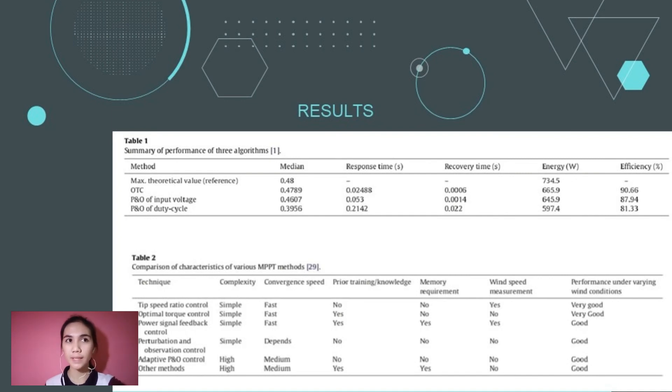It was followed by the P&O input voltage method, which took almost twice the time needed to reach the steady state, with the average value of coefficient power being 0.4607. While the P&O duty cycle method was found to be the slowest and least efficient method, as the response time was eight times longer than the first method. It was also found that P&O duty cycle method did not maintain the same value of maximum coefficient power all the time, as it decreased from 0.46 to 0.42 when the step changed in the wind speed occurred.